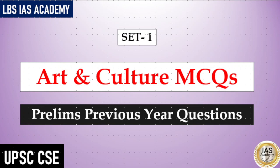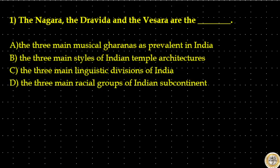Our first question is: The Nagara, the Dravida and the Vesera are included in which of the following category?